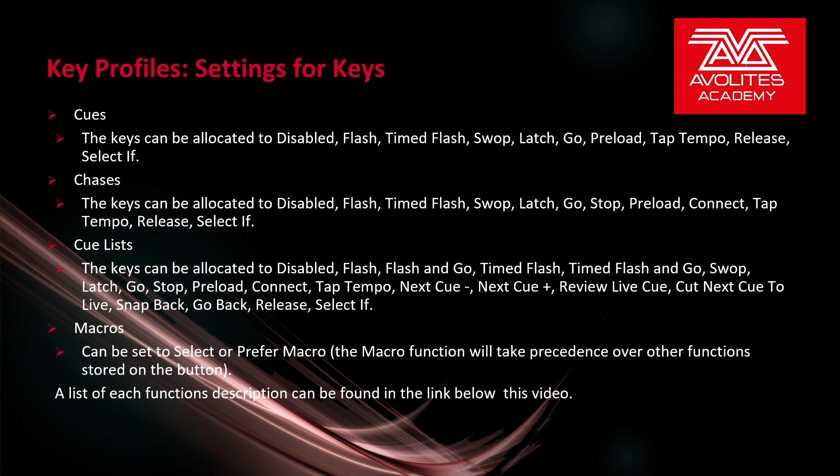For a chase, the keys can be allocated to: disabled, flash, timed flash, swap, latch, go, stop, preload, connect, tap tempo, release, and select if. The keys we haven't covered already would be stop and connect. Stop obviously stops the chase. Connect connects that chase to the wheels so you can adjust the BPM and crossfade for that particular chase.